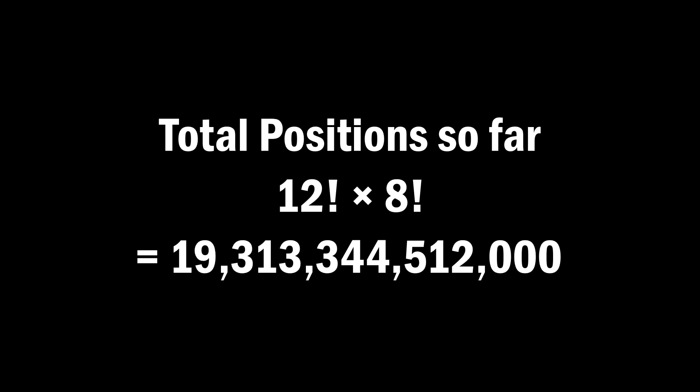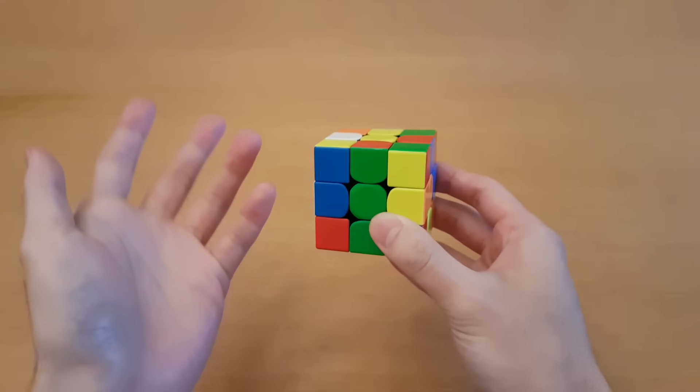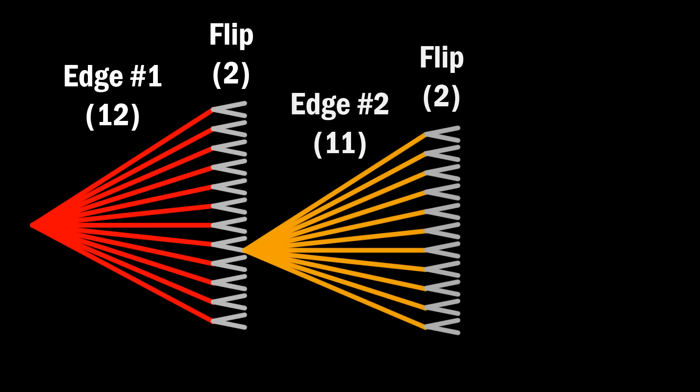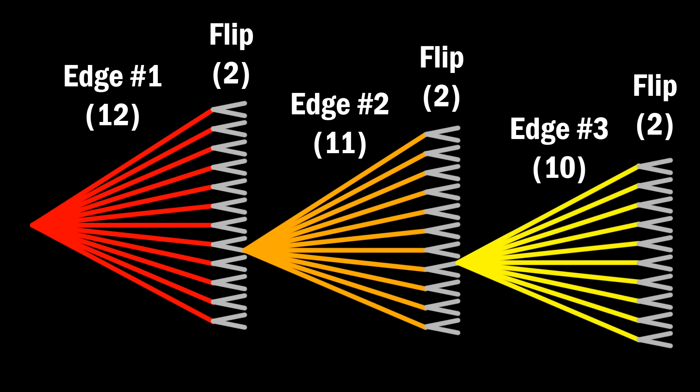But I haven't talked about what if we flipped these pieces in different ways. This edge, for example, could be in the same spot but flipped in the other way. So you can think about it this way. When I put the first edge in its spot, I had 12 choices of where to put it, but at each of those 12 spots, I can choose to have it flipped one way or the other way, which is another two options. So there are actually twice as many options of what to do with the first edge, and then twice as many for the next, and the next, and so on.